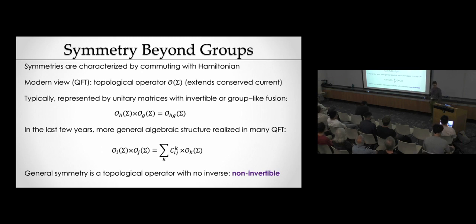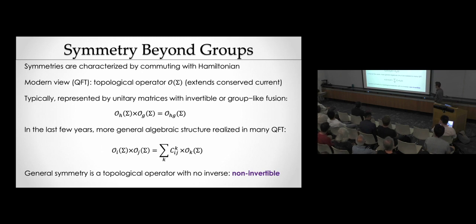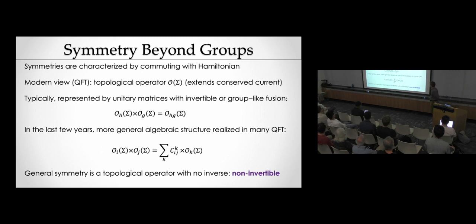The standard way of characterizing a symmetry in quantum field theory is that we have some operators that commute with the Hamiltonian. From a modern QFT perspective, we have some topological operator O of sigma — that's what encodes a symmetry for us. Sigma is some manifold in space-time where you put the operator. This extends the idea of current conservation: a conserved current integrates to a charge, which is a topological operator.